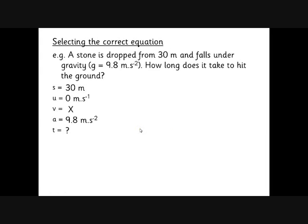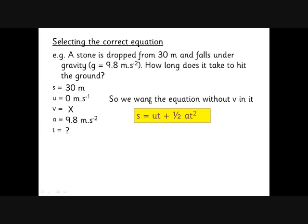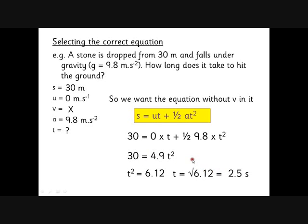We look at that, we think what equation do I want? Well, I don't know V and I don't care about V, so we want the equation that doesn't have V in it. They'll all be on the data sheet, so all you've got to do is look for the one without V in it. So that's S equals UT plus half AT squared. Once we've got that, we just put in the data we've got straight from there. Don't do anything clever, don't try and think about it, just write down the numbers that you've already written over there. Be careful with naught T, because naught T is naught, so you end up with 30 equals half of 9.8, which is 4.9, times T squared. T squared is 6.12, T equals 2.5 seconds.